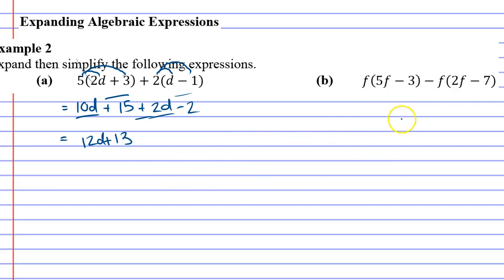Again, arcs connecting the f to both terms inside the brackets and the negative f to both terms inside the brackets. So f times 5f actually gives you 5f squared. When you multiply the f by an f you end up with f squared. F times negative 3 is negative 3f.